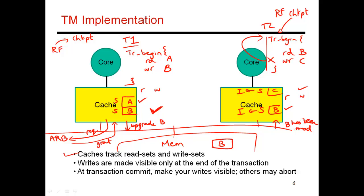Caches have to track read and write sets. Writes are kept private and made visible at the end of the transaction. At the time of transaction commit, that's when you go through your list, clear out your read and write bits, and expose your writes to everybody else. This can force other transactions to abort.